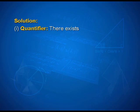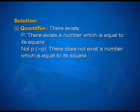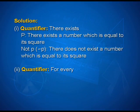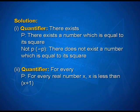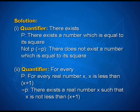Now let us look at the solutions. First, the quantifier is 'there exists.' Statement P is: there exists a number which is equal to its square. Not P is: there does not exist a number which is equal to its square. In the second case, the quantifier is 'for every.' P is: for every real number x, x is less than x plus 1. So not P will be: there exists a real number x such that x is not less than x plus 1.